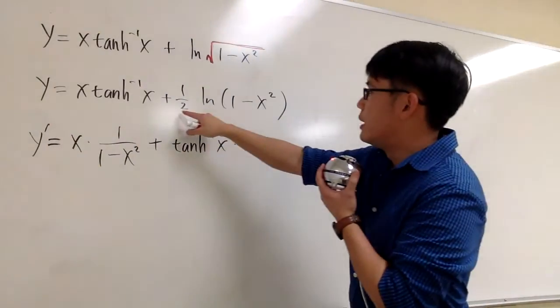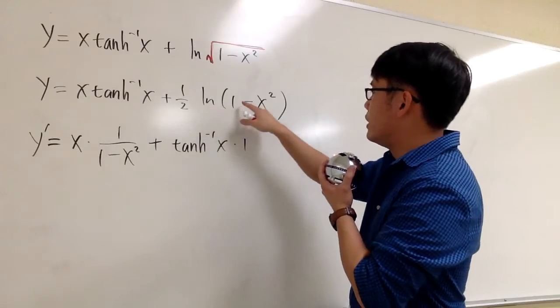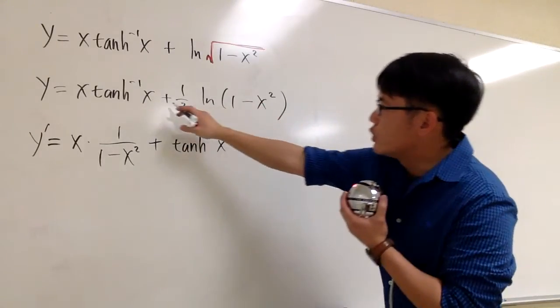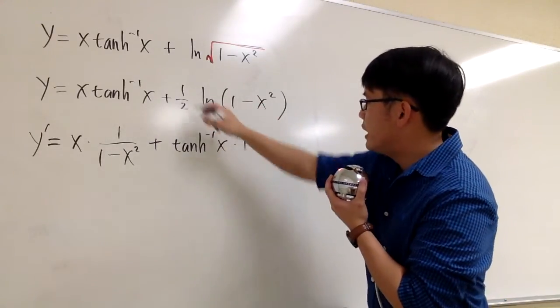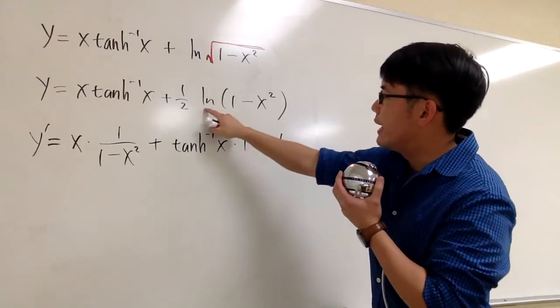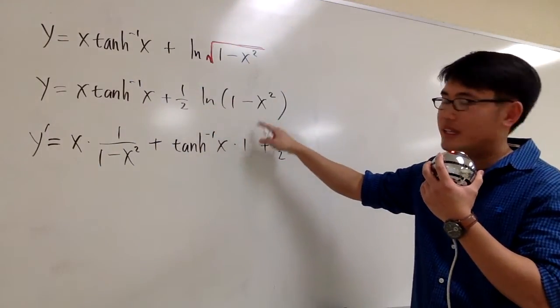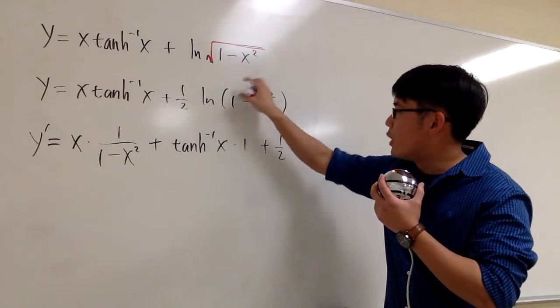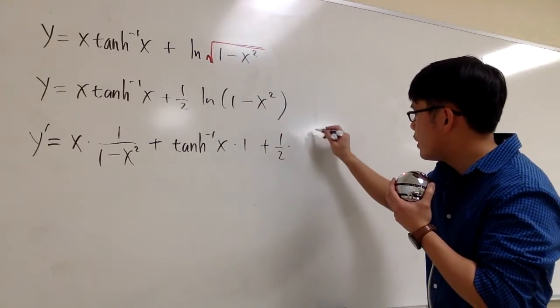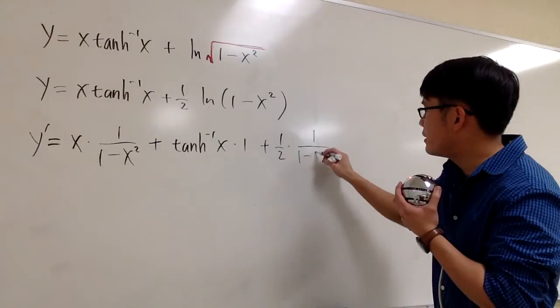And for the second part, we have plus 1 half times ln of 1 minus x squared. So we write down the plus, and we can write down the 1 half first. And to take the derivative of ln of something, we begin by writing down as 1 over the same thing right here. 1 over that, 1 minus x squared.